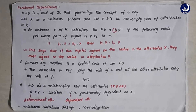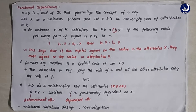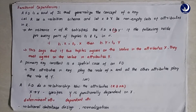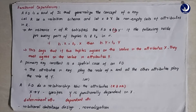A functional dependency is a kind of integrity constraint that generalizes the concept of a key. A key is a set of attributes or a single attribute that is part of a relation. Sometimes it is used for identifying tuples uniquely — then we call it a primary key. If a combination can uniquely identify another attribute, we call it a candidate key. So functional dependency generalizes the concept of keys.